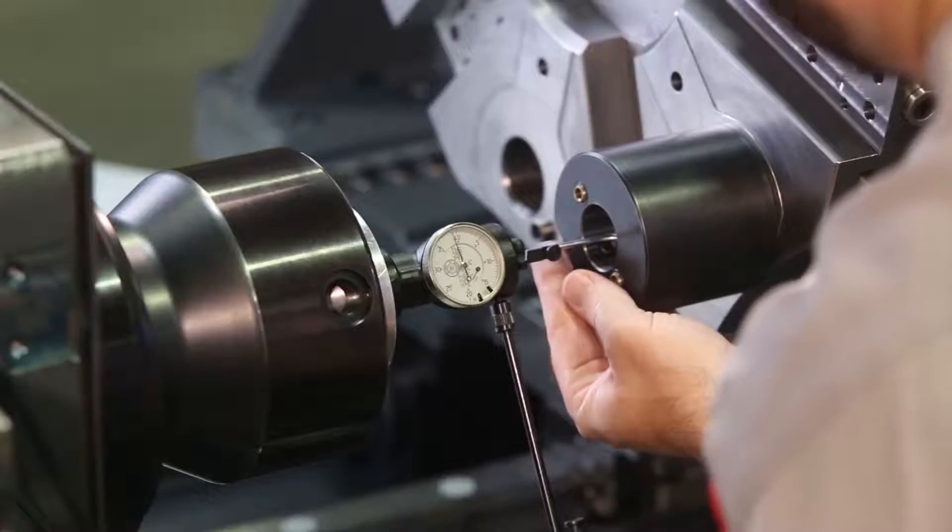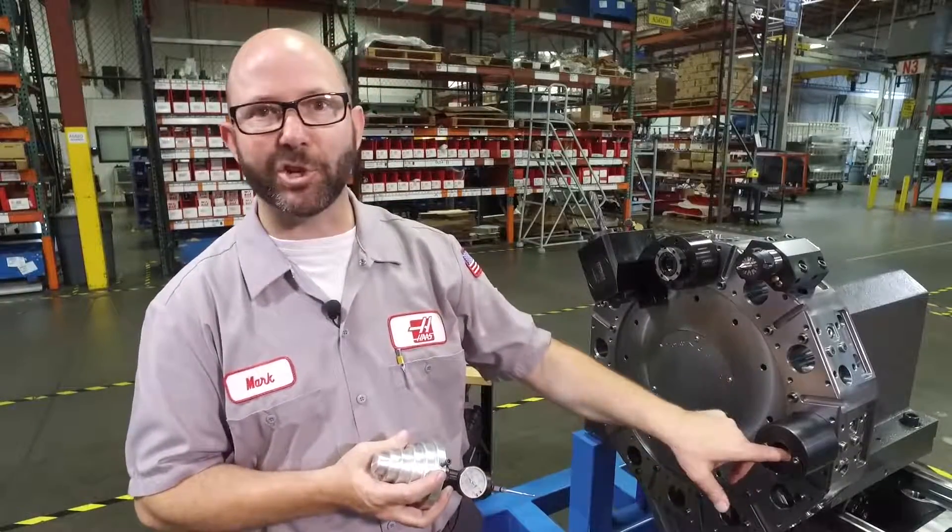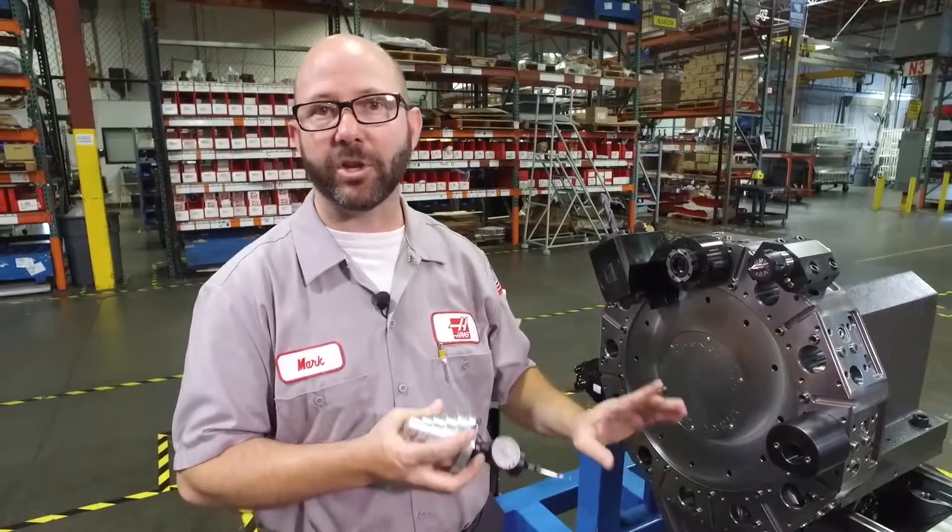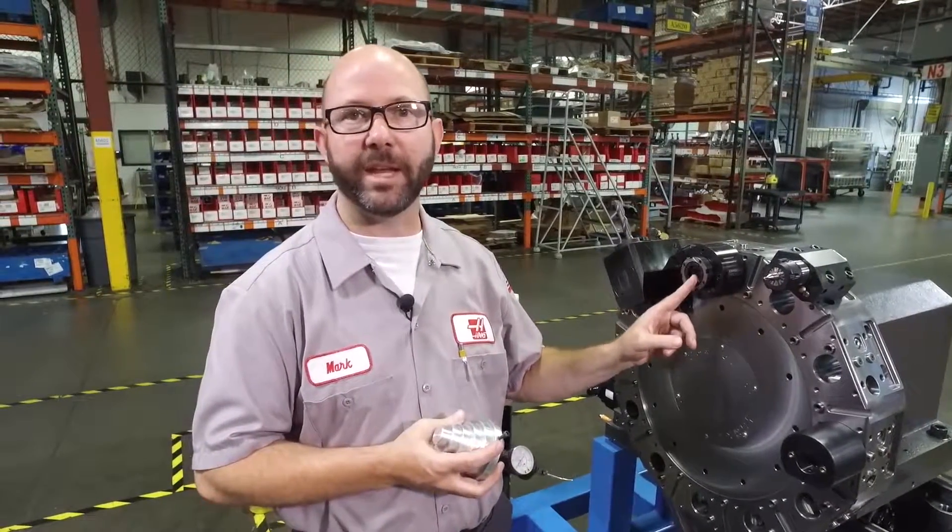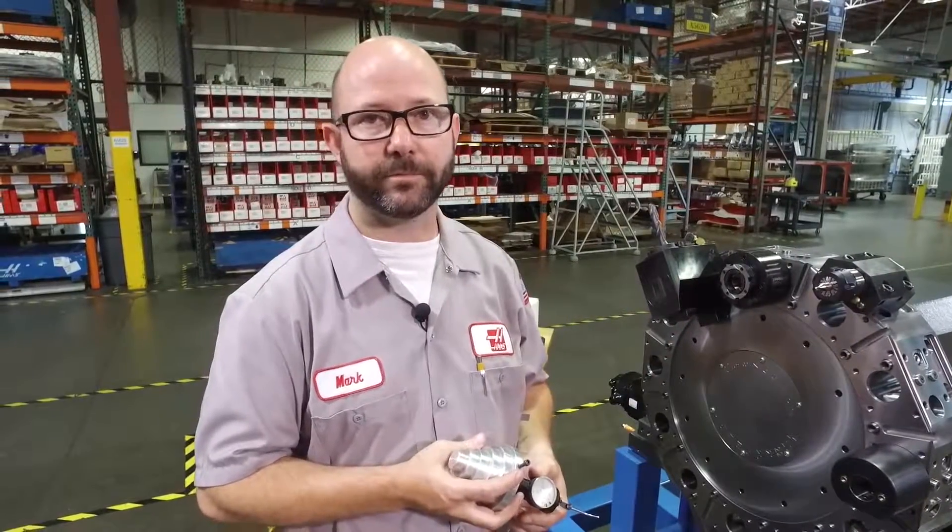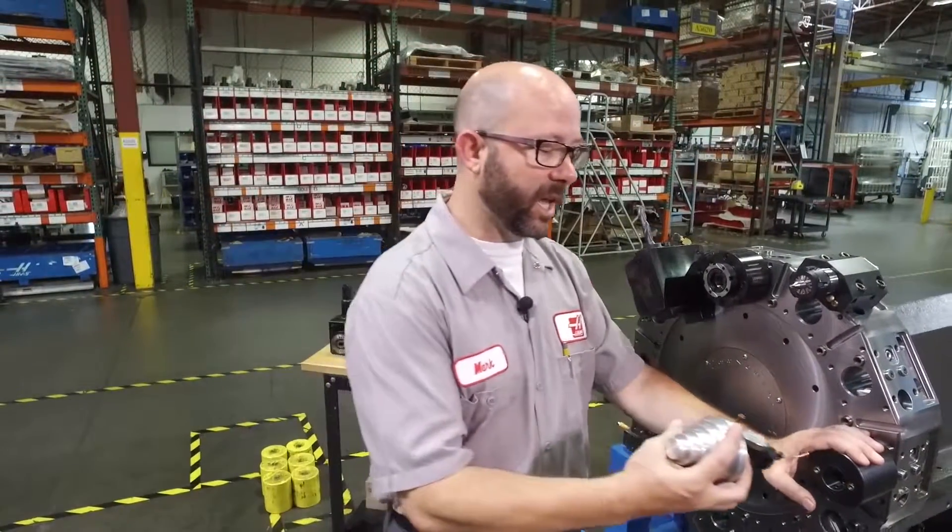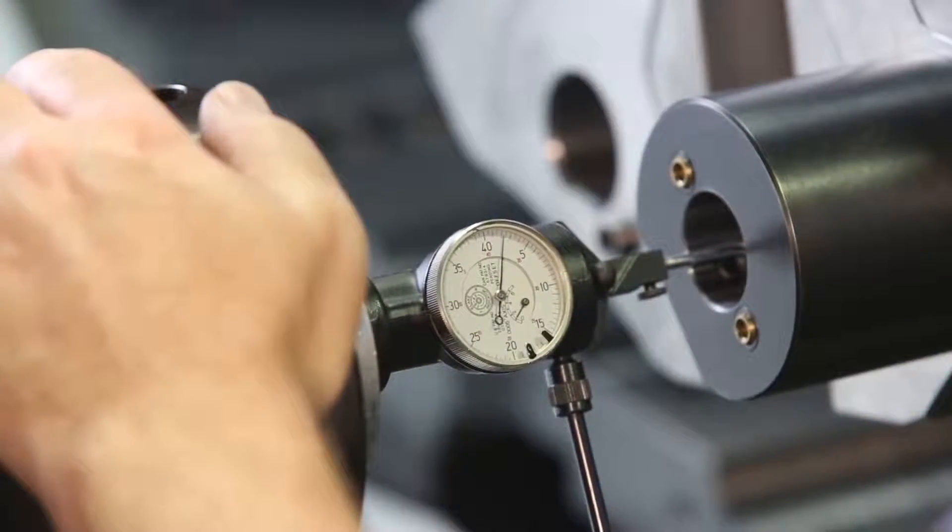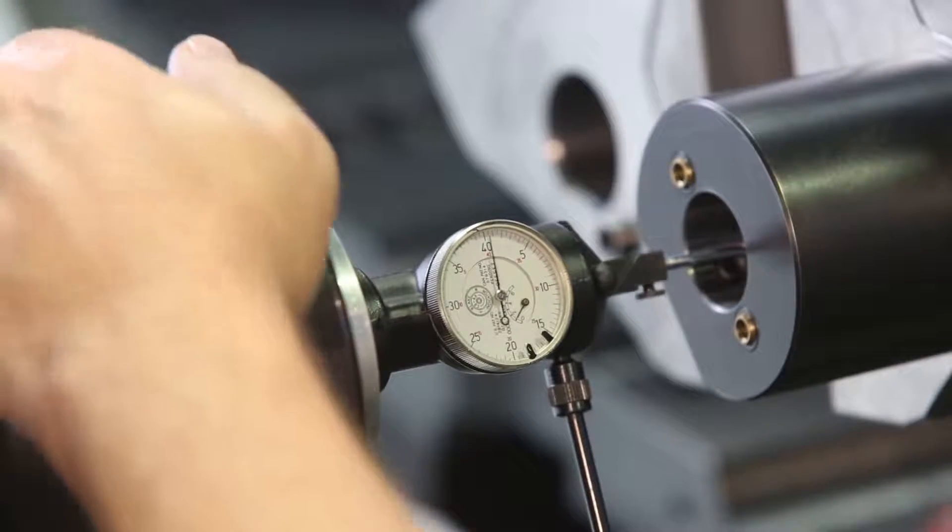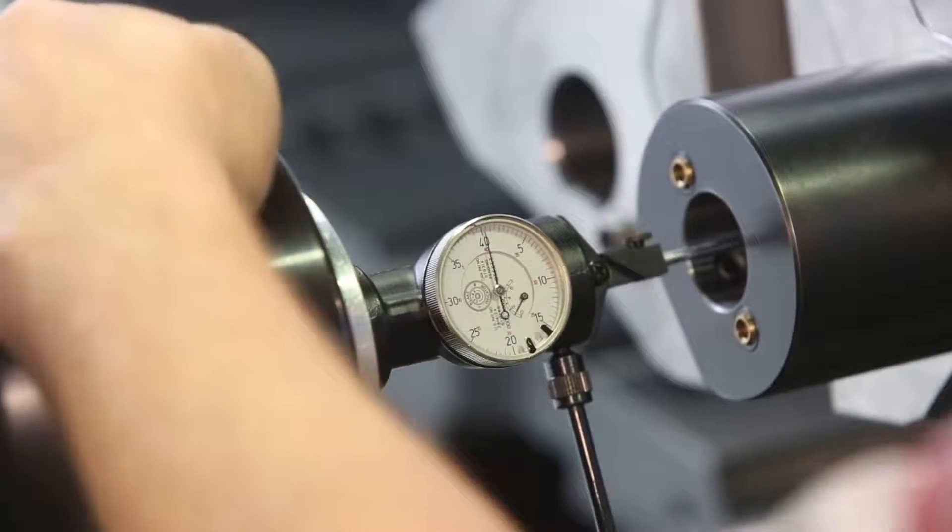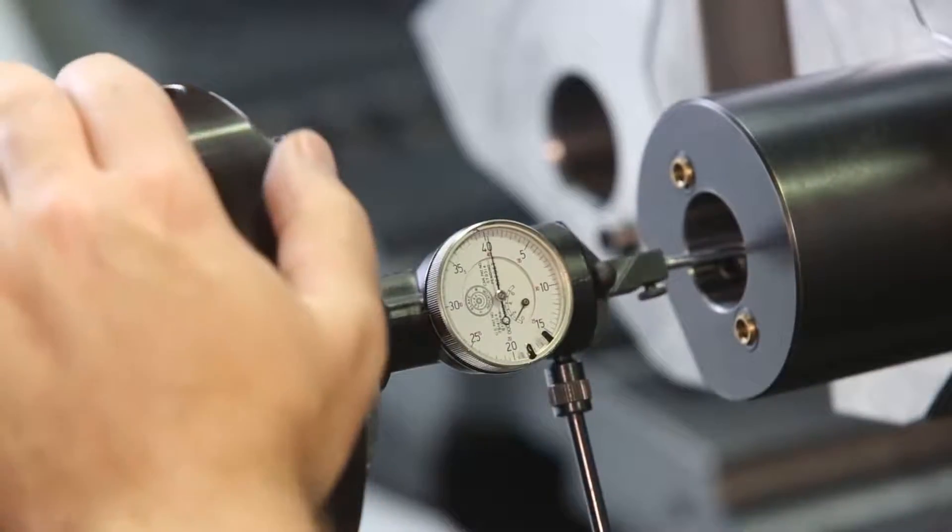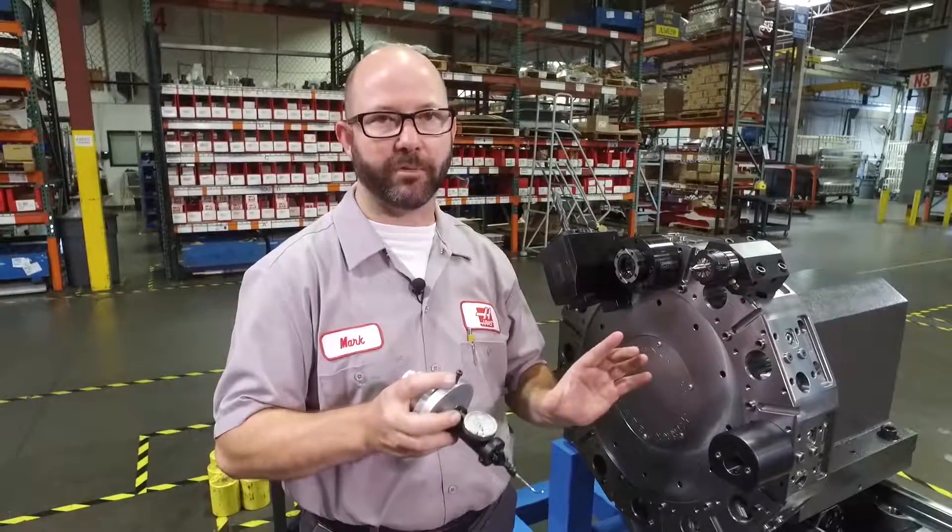Now I like to use a boring bar holder because of its nice ground ID surface. Now you can also indicate off the outside of a pin mounted into a VDI holder or even off a tool itself. Now when this indicator is in the holder you can adjust it up and down until you find the X axis center line. If you happen to have a Y axis lathe you can also make small adjustments to the Y axis to get your tools just perfect.